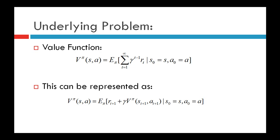The value function for a given policy π for a particular state-action pair (s, a) is defined as the expected value of the future discounted reward that an agent can receive when it takes action a in state s, makes a transition to the next state s_{t+1}, and thereafter follows policy π. The value function V^π(s, a) is the expected sum over all future discounted rewards, provided the present state is S0 = s and the action taken is A0 = a.